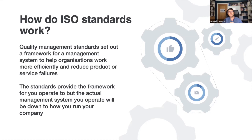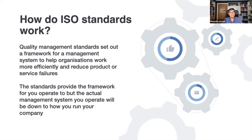These people include manufacturers, sellers, buyers, customers, trade associations, users, and even regulators. To take ISO 9001, quality management standards set out a framework to help organizations work more efficiently and reduce product or service failures. Similarly, environmental management standards help reduce environmental impacts; health and safety standards help reduce workplace accidents; and information security standards help keep sensitive information secure. The standards really do provide the framework for you to operate in.